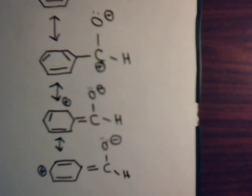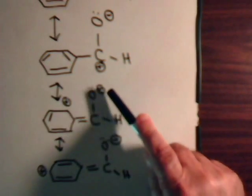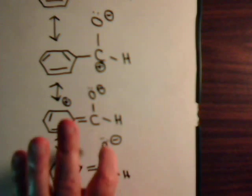Here are the canonical structures. This is the original molecule. Then we draw the canonical structures. Notice there is charge separation: negative, positive, negative, positive, negative, positive. But oxygen, being more electronegative, has the negative charge — so that's a pretty decent setup.